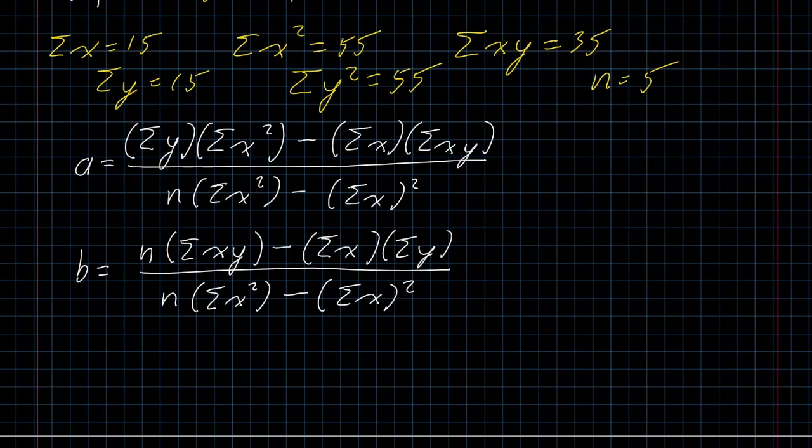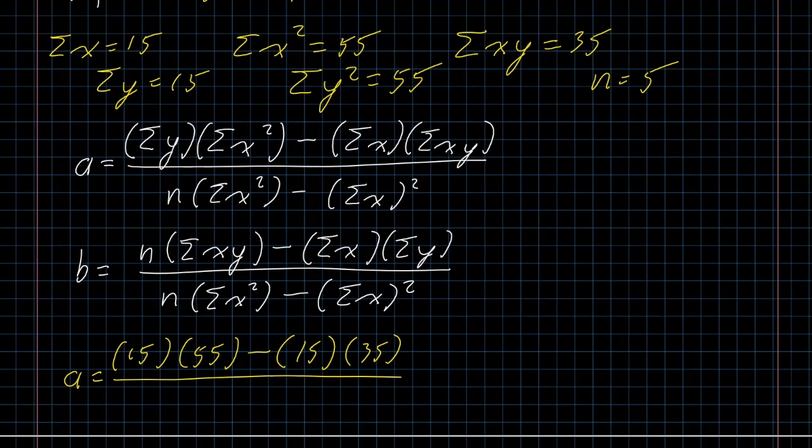Just like we learned when we were calculating the value of R, we know all of these things. And in fact, because we had to test whether the correlation was statistically significant or not, we already calculated all these things. It's just a matter of plugging everything into the formula. Sigma y is 15. Sigma x squared is 55. Sigma x is 15. Sigma xy is 35. n is 5. Sigma x is 15. And we square it.